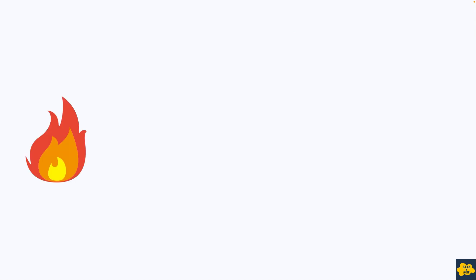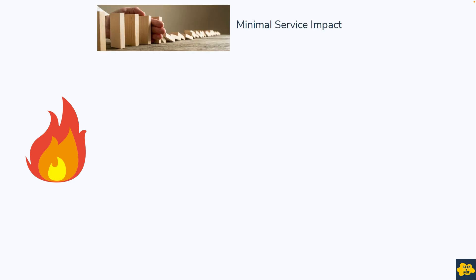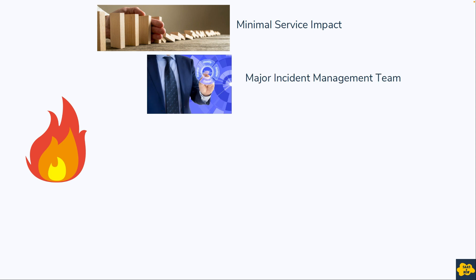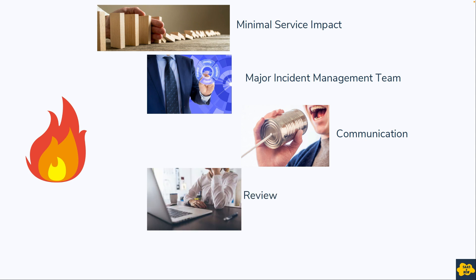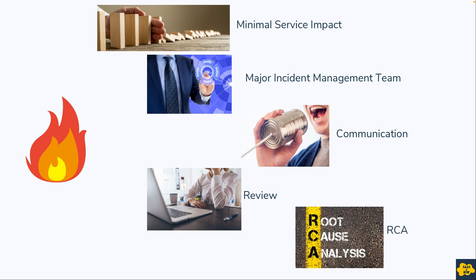The organization should ensure that during a major incident there is minimal service impact. They need to ensure that the responsible incident manager, major incident team, and core management group are allocated. Stakeholders and relevant parties must be well informed about service interruptions and receive regular updates. A review of each major incident should be conducted once service is restored to analyze and prevent similar incidents in the future. Once resolved, a problem record should be created for root cause analysis.